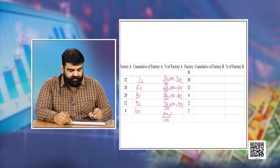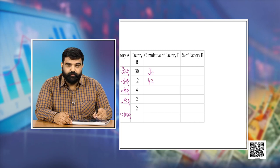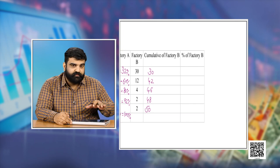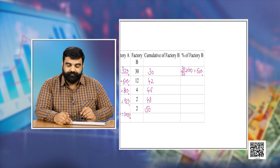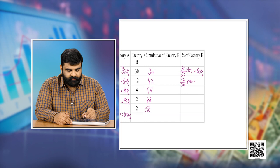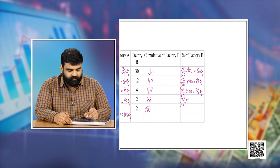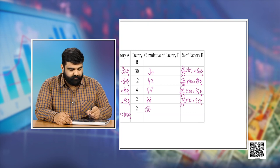For Factory B, the frequencies are 30, 12, 4, 2, and 2 (a typo in transcript — listed as 50 total). The cumulative values are 30, 42, 46, 48, and 50. The percentages are: 30/50×100 = 60%, 42/50×100 = 84%, 46/50×100 = 92%, 48/50×100 = 96%, and 50/50×100 = 100%.